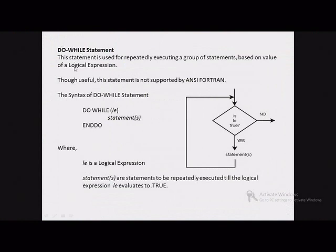The do-while statement is used for repeatedly executing a group of statements based on the value of a logical expression. We can understand the working of the do-while statement using a diagram. At the beginning of the loop there is a test expression in the form of a logical expression. If this expression evaluates to true, the loop body is executed, then control is transferred back to the test expression. This process continues till the condition evaluates to true; when it evaluates to false, control is transferred outside the loop.